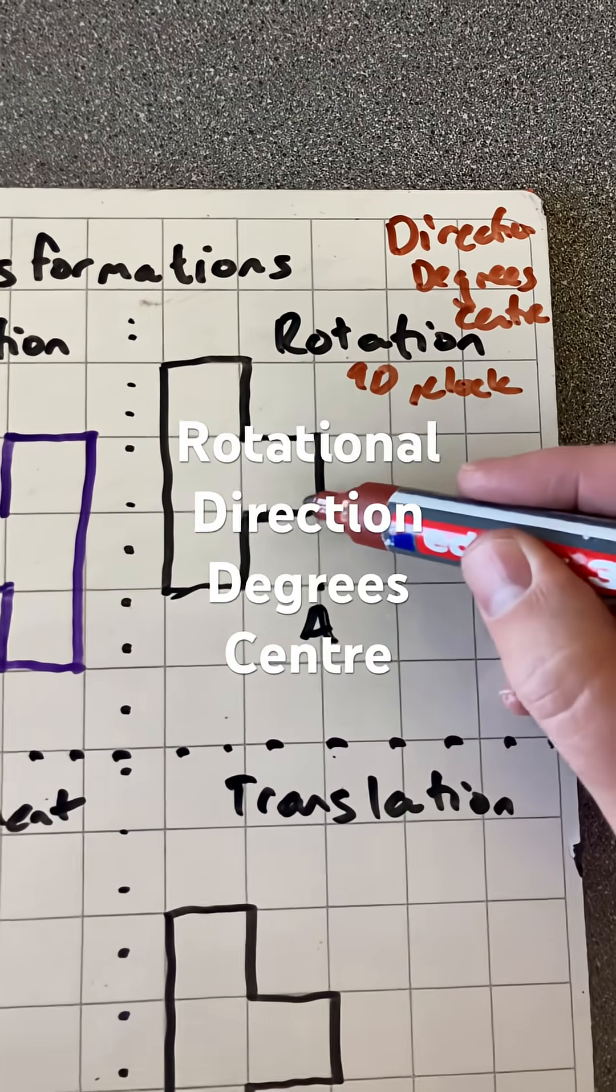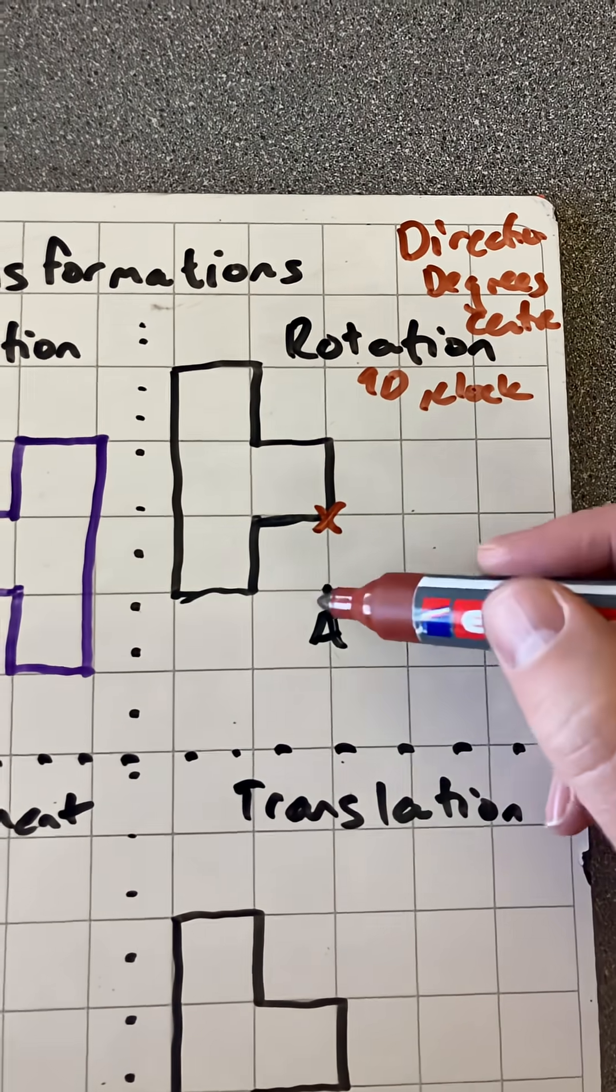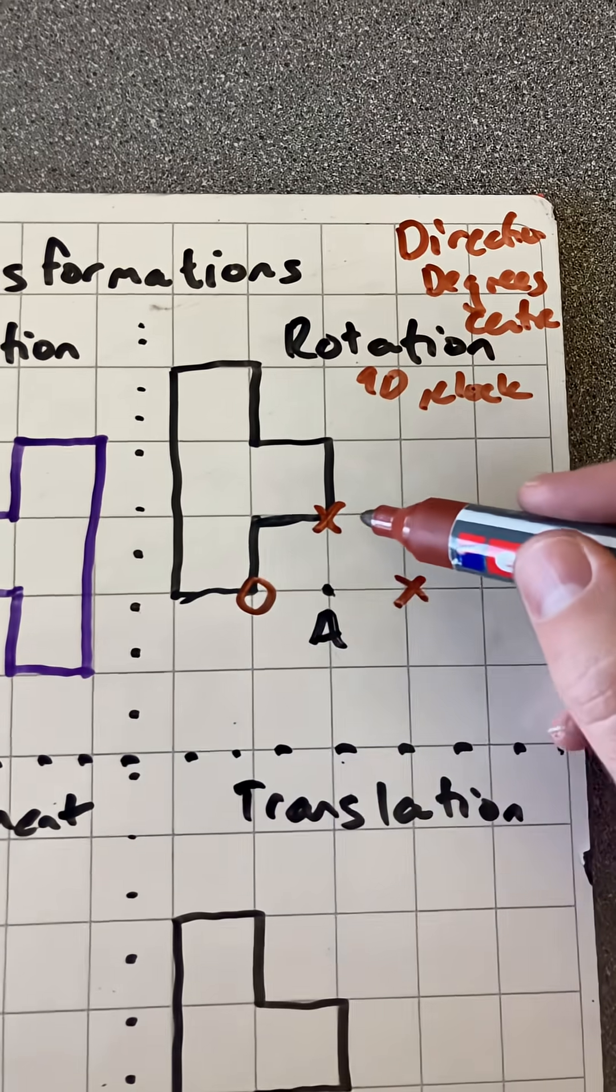If this point marked X is one up, it'll move to one across. This one is one to the left, it'll then move up here.